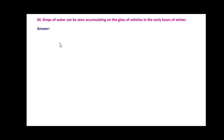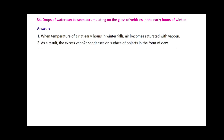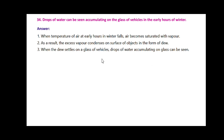Drops of water can be seen accumulating on the glass of vehicles in the early hours of winter. When the temperature of air in the early hours falls, air becomes saturated with vapor. As a result, the excess vapor condenses on the surface of objects in the form of dew. When dew settles on the glass of vehicles, drops of water accumulating on the glass can be seen.